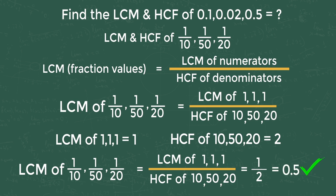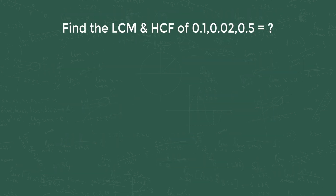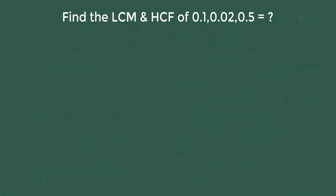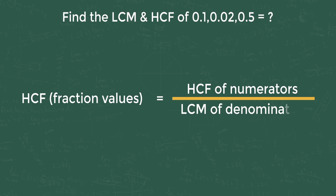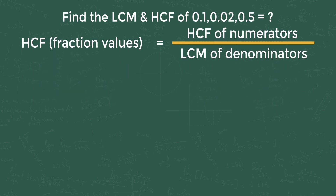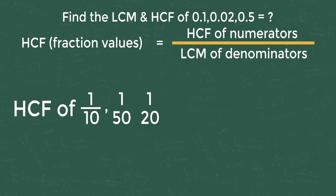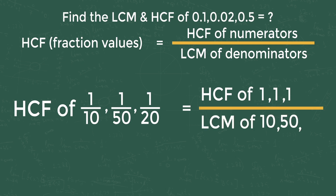For finding the HCF, we use the formula: HCF of fraction values equals HCF of numerators divided by LCM of denominators. In our problem, the numerators are 1, 1, 1 and the denominators are 10, 50, 20. So HCF of 1/10, 1/50, 1/20 equals HCF of (1, 1, 1) divided by LCM of (10, 50, 20).